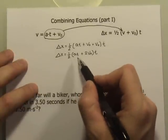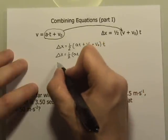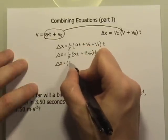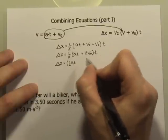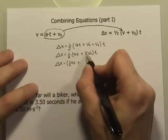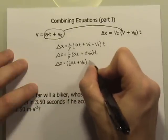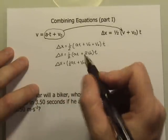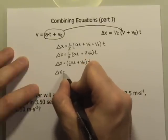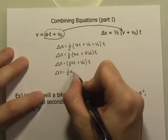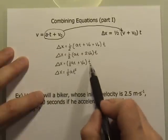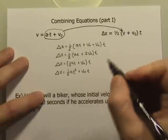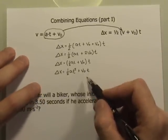Let's go ahead and take the one half into the parentheses, one step at a time. Delta x equals one half at plus — now the one half and the two will cancel each other out — so I end up with just v-naught, multiplied by t. Then distributing the t into the parentheses, that leaves us with delta x equals one half at squared plus v-naught times t. This will be one of our final versions of the equation.